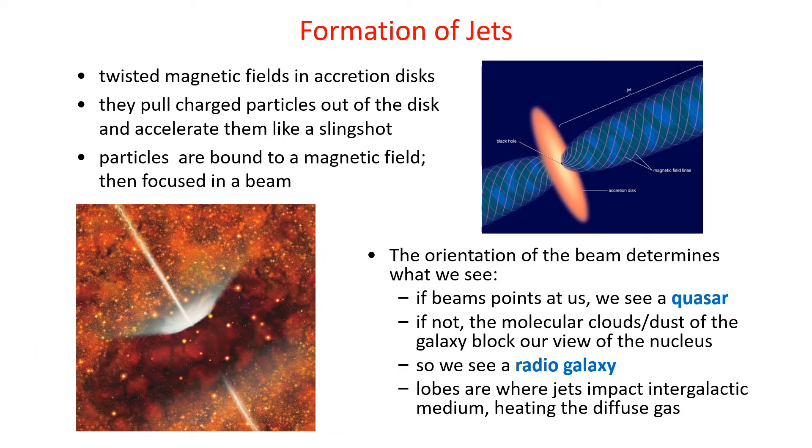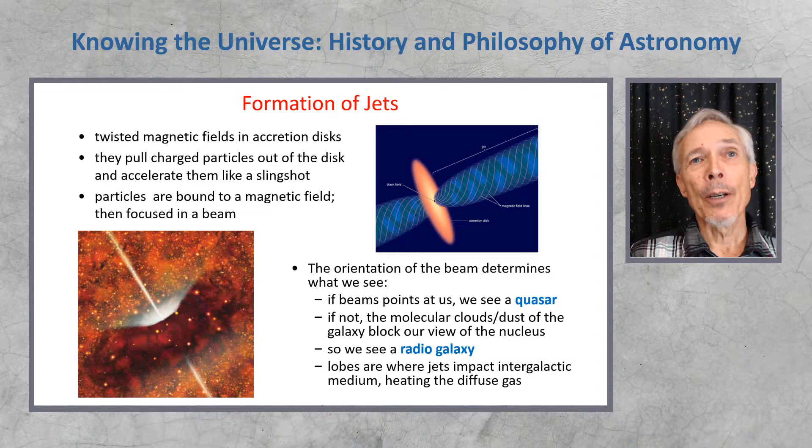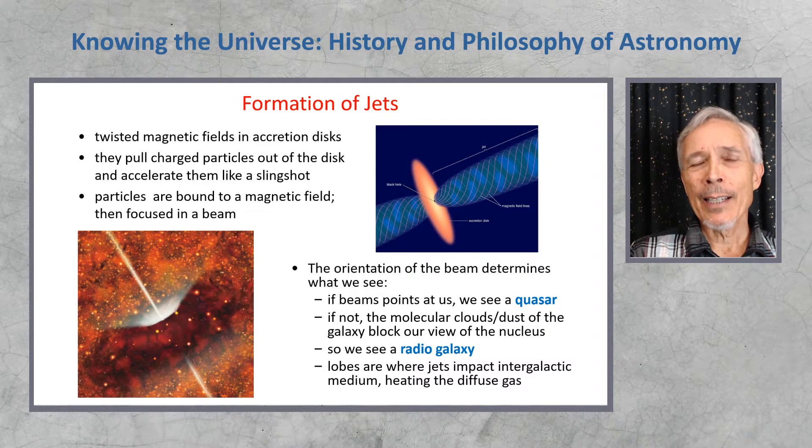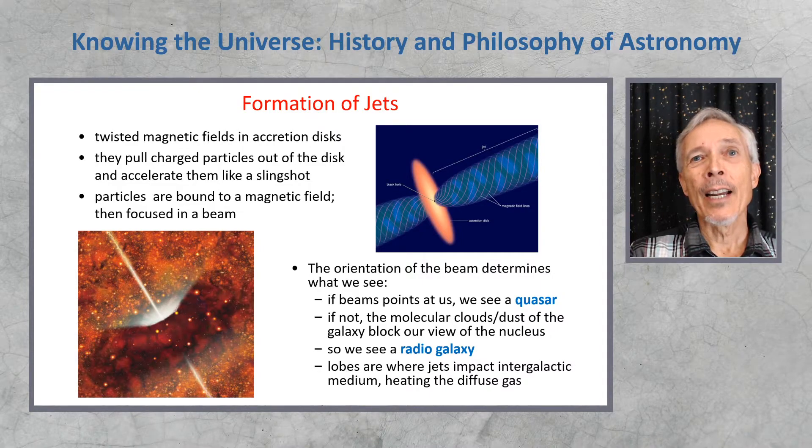The jets themselves are very interesting, because they include twisted magnetic fields bound in the accretion disk, and the magnetic field from the black hole itself. They pull charged particles out of the disk and accelerate them like a slingshot. Particles are bound to a magnetic field and then focused in a beam. The astrophysics of this is very complicated, and was worked out mostly in the 1970s and 80s, and finally with computer simulations in the 1990s.